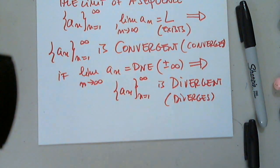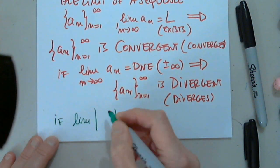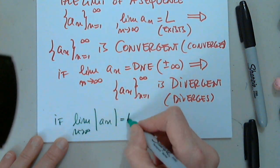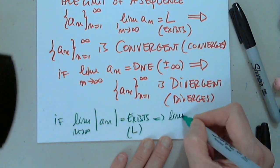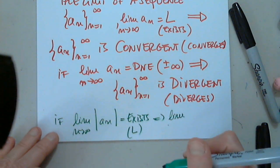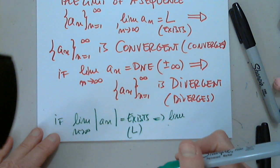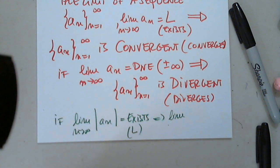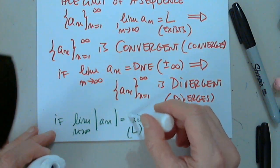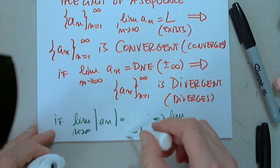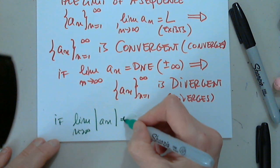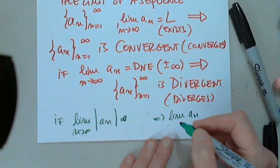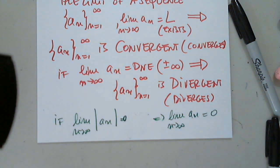Another important result: if the limit of the absolute value of the general term equals zero, then the limit of the general term itself — without the absolute value — as n approaches infinity is also zero. So if the absolute value limit is zero, then the general term limit is also zero. It's a result we should be aware of.